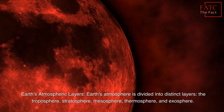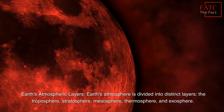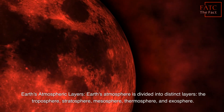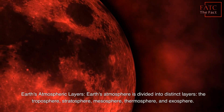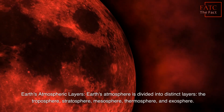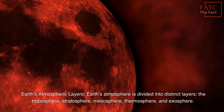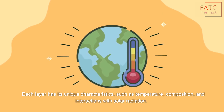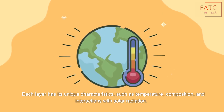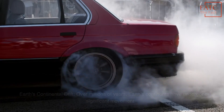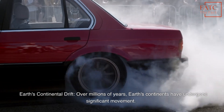Earth's Atmospheric Layers: Earth's atmosphere is divided into distinct layers — the troposphere, stratosphere, mesosphere, thermosphere, and exosphere. Each layer has its unique characteristics, such as temperature, composition, and interactions with solar radiation.